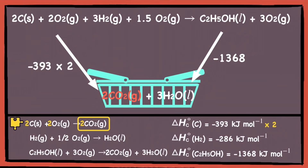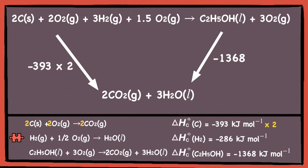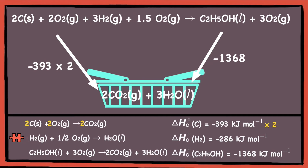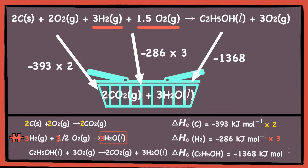Still don't really get it? Don't worry — let me show you by fitting the final equation into the energy cycle. Since the main equation has three moles of hydrogen gas, we need to multiply the second equation by three so that we can fit it into the energy cycle. So three moles of hydrogen reacts with 1.5 moles of oxygen, and we draw an arrow down and label the enthalpy change, multiplied by three. We do not need to add in another three moles of water because the basket of substances already has three moles of water, which can be used to satisfy the equation and tally the numbers correctly.